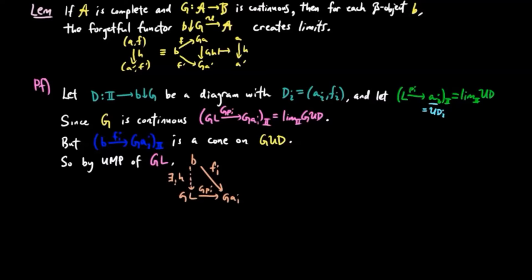FI is equal to GPH. This forms a cone on D, and we claim this cone given by PI from LH to AIFI is the limit of D.